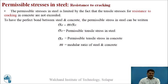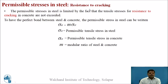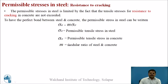Now let us look at permissible stresses in steel. For resistance to cracking, the permissible stress in steel is limited so that tensile stresses in concrete for resistance to cracking are not exceeded. For perfect bond between steel and concrete, the formula is: σ_ST = M × σ_CT, where σ_ST is permissible tensile stress in steel, σ_CT is permissible tensile stress in concrete, and M is the modular ratio.